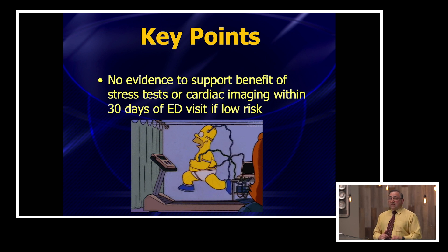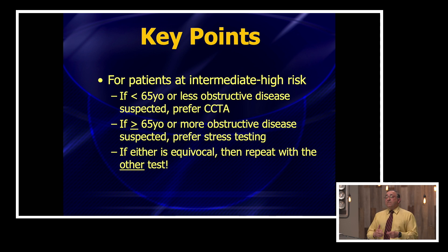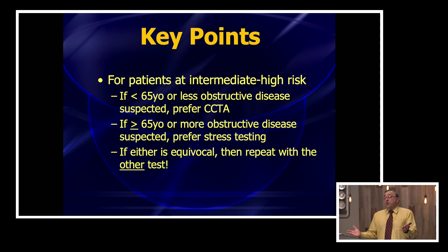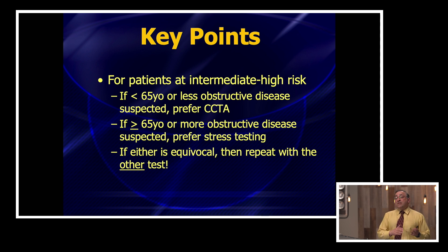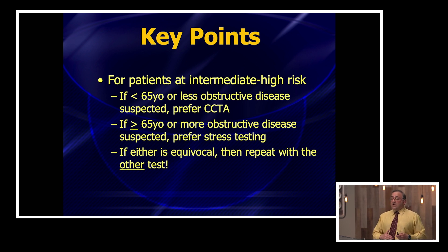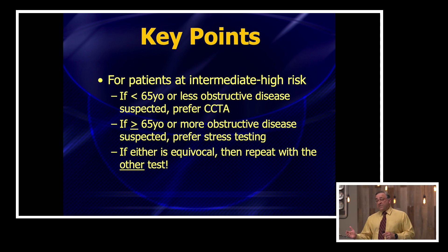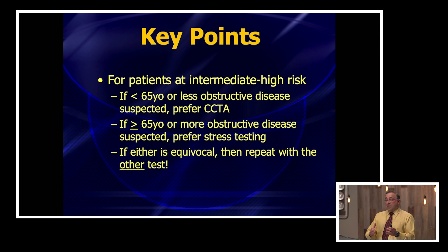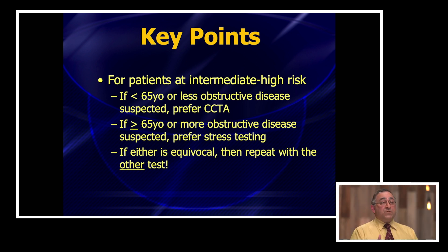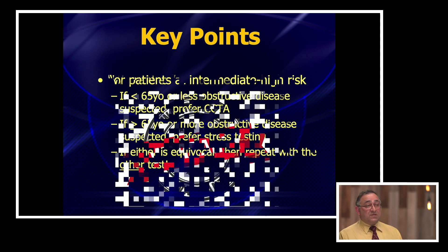If they have intermediate risk, those are the patients that do need some type of workup. They hedge on this a bit: if they're under 65 and less likely to have obstructive disease, you probably ought to get a coronary CTA. If they're over 65 and have more obstructive disease, go ahead with stress testing. If the result from either of these is equivocal, then go ahead and get the other test as an alternative.